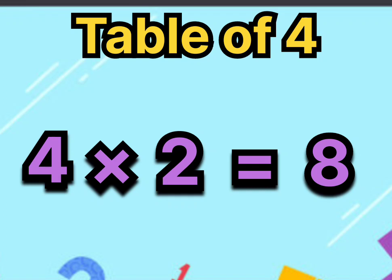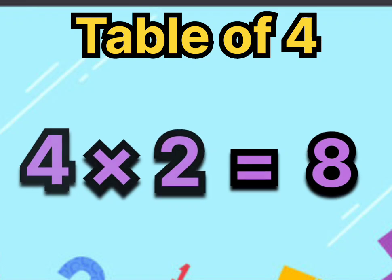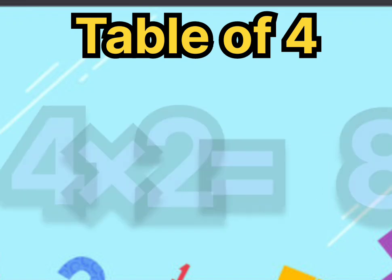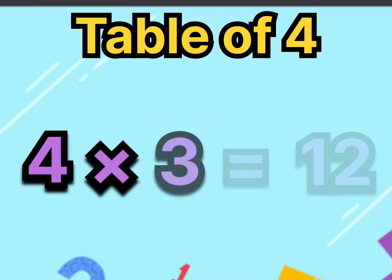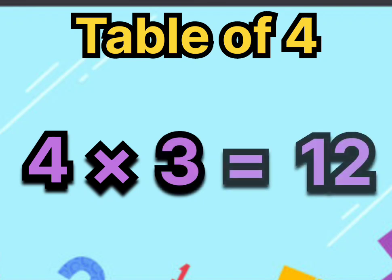Four twos are eight. Four threes are twelve. Say it again, four threes are twelve.